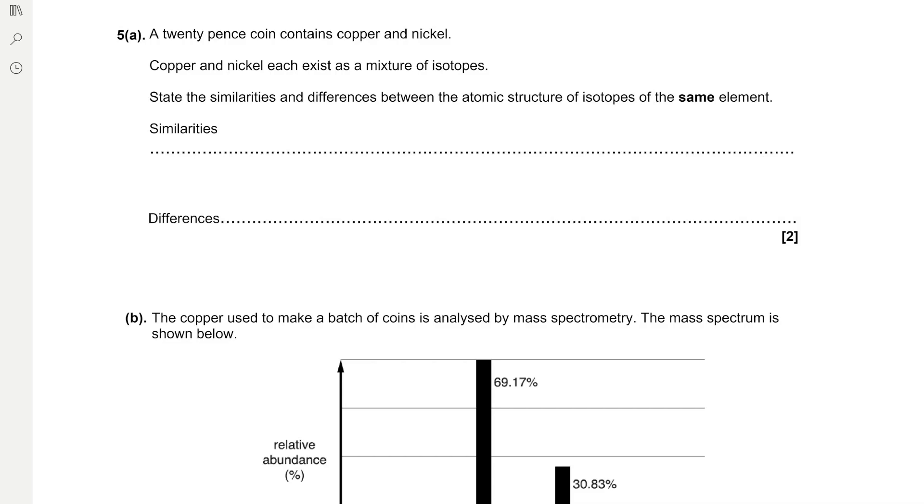A 20 pence coin contains copper and nickel. Copper and nickel each exist as a mixture of isotopes. State the similarities and differences between the atomic structures of isotopes of the same element. So the key information here is the same element. The similarity is that they each have the same number of protons and the same number of electrons. The difference is that they have a different number of neutrons.